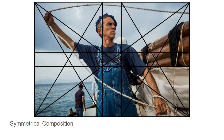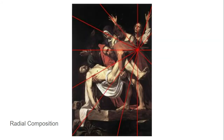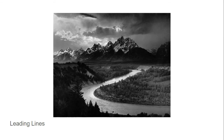We have the symmetrical composition, which could be symmetrical vertically, horizontally, or diagonally. We have a radial composition, where there are multiple points that extend from a center, and the leading lines, where some features of the environment tend to pull us towards the main object.